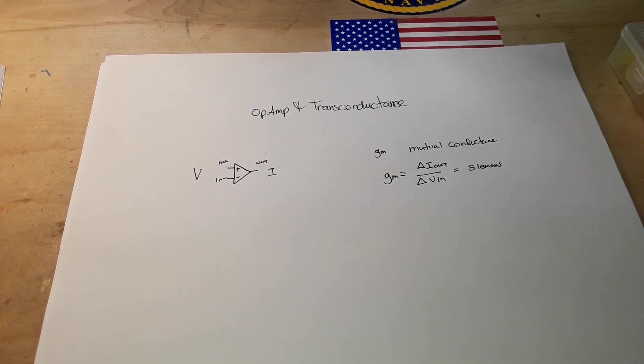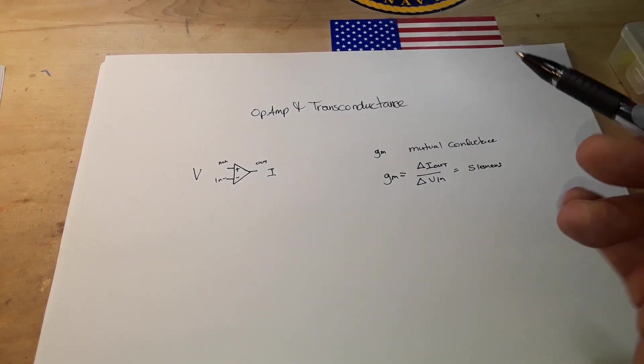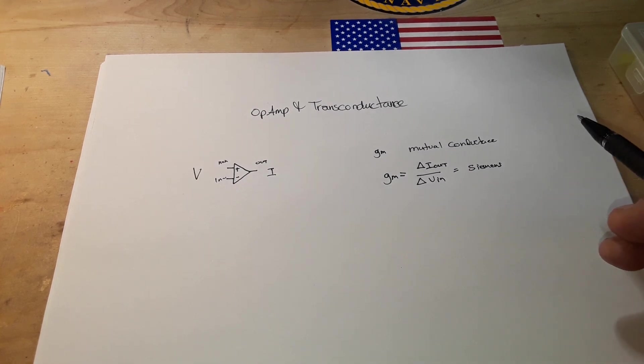I probably dyslexicked those I's and E's around, I do that sometimes. There's also trans-resistance, which is mutual resistance. Conductance is the opposite of resistance, obviously, but we don't really have to talk about any of that today.